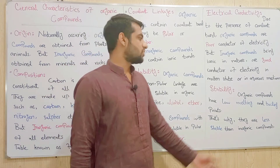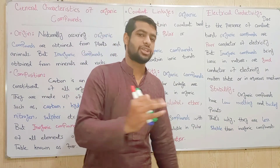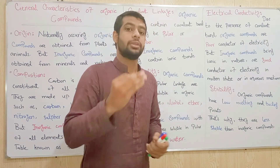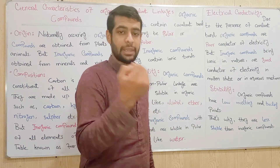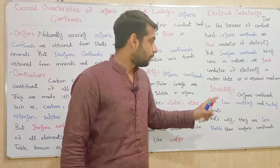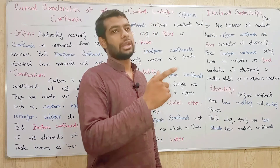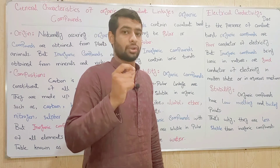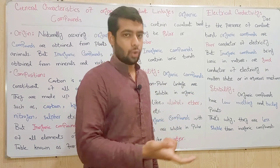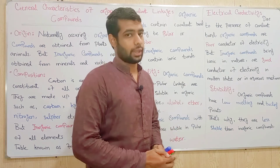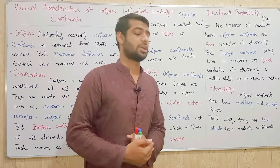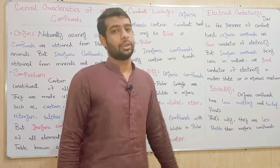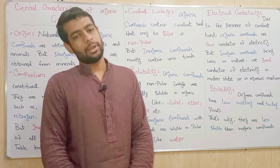The last point is stability. Organic compounds have low melting and boiling points because they contain covalent bonds. Inorganic compounds have high melting and boiling points due to ionic bonds, which are stronger than covalent bonds. That is why inorganic compounds have high melting and boiling points, and organic compounds, having low melting and boiling points, are less stable than inorganic compounds.